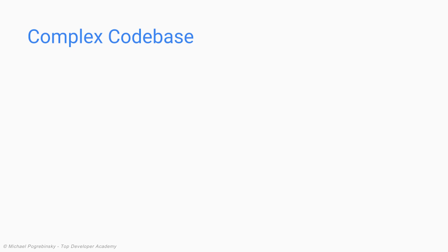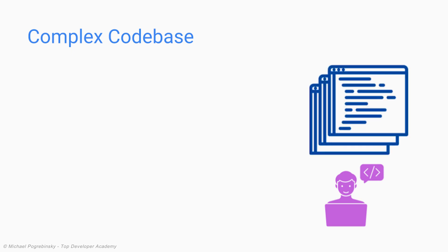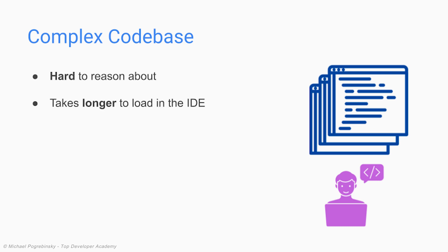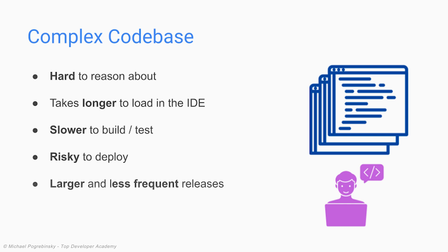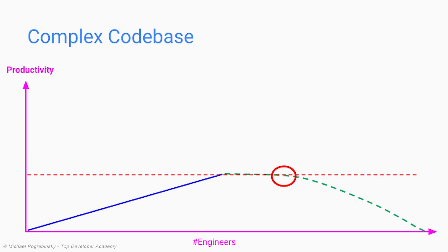But the number of engineers is not the only issue. As we add more features to our application, our codebase becomes larger and more complex. This makes it harder to reason about, it takes longer to load in the IDE, slower to build and test, and riskier to deploy. As a result, our release schedule becomes less frequent, which actually makes things even worse, because now every new release contains even more features, increasing the chances of bugs and outages. Finally, onboarding new developers now takes more time, as it is much harder for them to get familiar with this large codebase. So essentially, with every additional engineer in the team, we start seeing diminishing returns, until we reach a point where adding more people to the team actually reduces everyone's productivity.